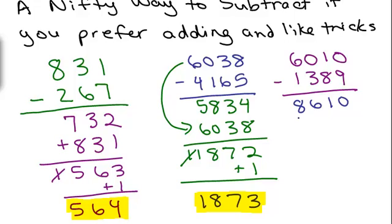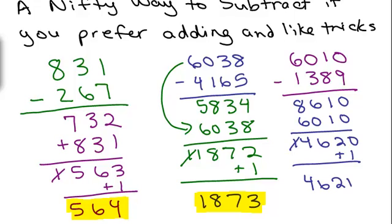We add that to the top number, which is the 6010. That gives 14620. Take off the first one. Add it to the end. And our answer is 4621. And that is our answer. Enjoy.